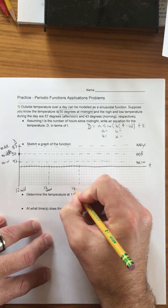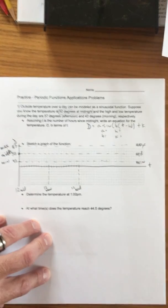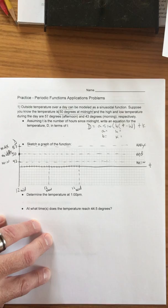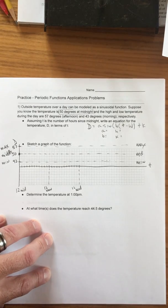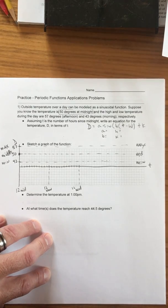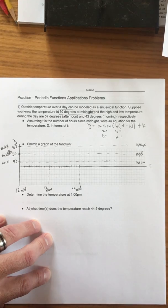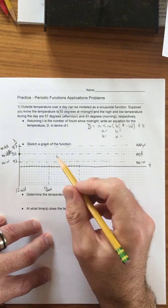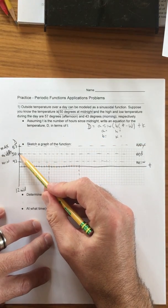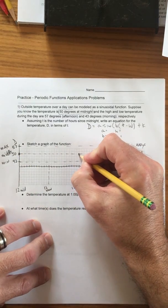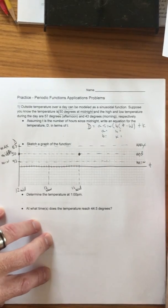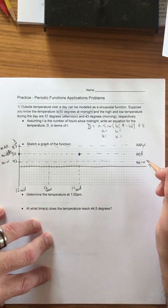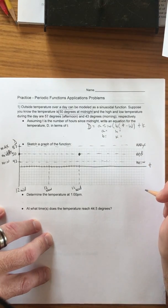That'll be 12 midnight again. We're gonna have to make some assumptions here that if it's at 50 at midnight then it's gonna be 50 at midnight again. And if this is going to be a sine, then it's gonna get hotter.